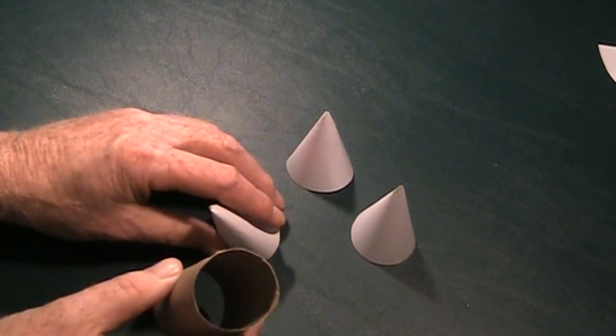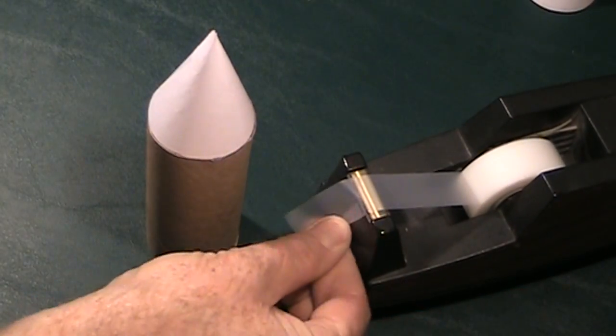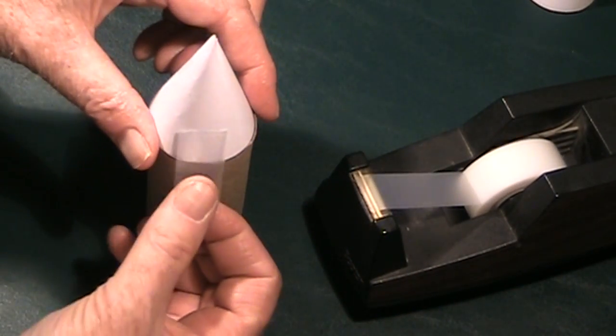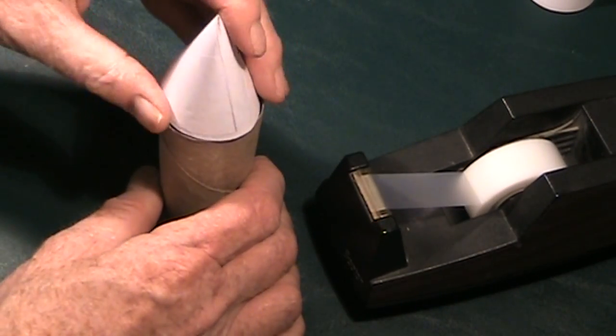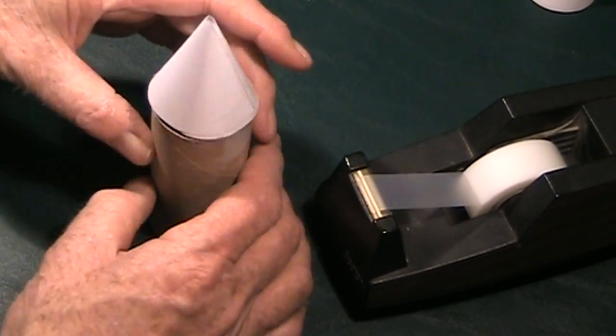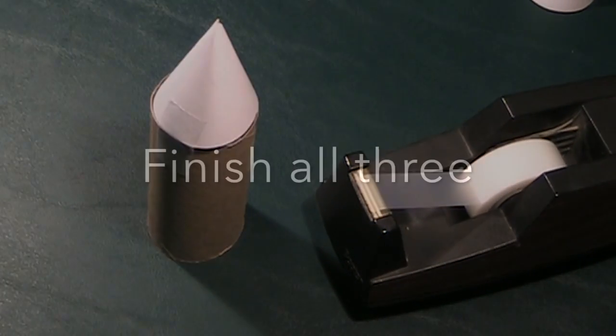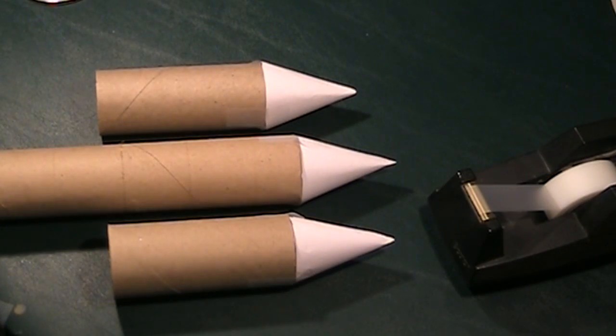Now for the really fun part, we get to put it all together. Take one of your toilet paper rolls and place a cone on top. Next get a piece of tape and on one side apply the tape to the cone and the toilet paper roll. On the other side do the same. Once you've built the first one, the next two cones will be very easy to do.